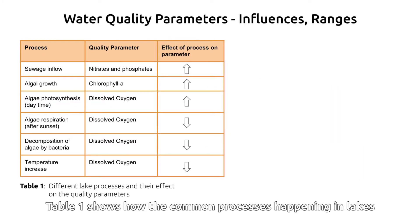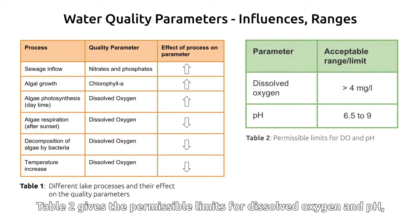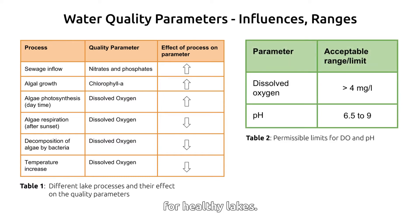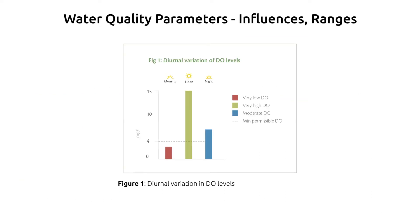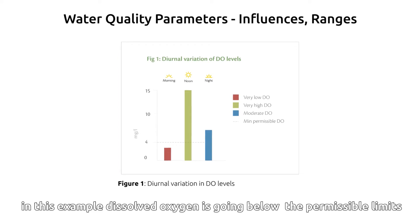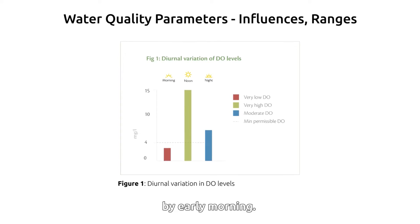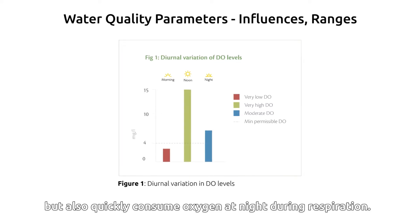Table 1 shows how common processes happening in lakes increase or decrease the values of different parameters. Table 2 gives the permissible limits for dissolved oxygen and pH for healthy lakes. There are no permissible limits set for the other parameters as of yet. Figure 1 shows a typical variation of dissolved oxygen during a 24-hour cycle — in this example, dissolved oxygen is going below the permissible limits by early morning. Algae produce oxygen during the day through photosynthesis but also quickly consume oxygen at night during respiration.